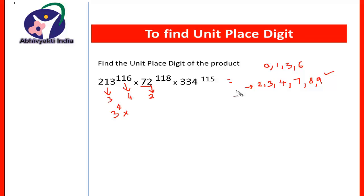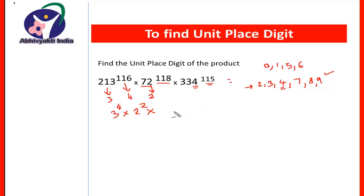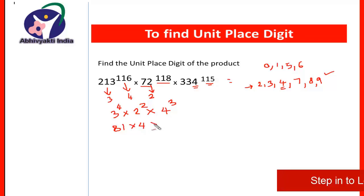For the next term, the unit place digit is 2. Again in the second case, we divide 118 by 4, get remainder 2, and write it as 2 to the power 2. For the third term, we divide the index by 4, get remainder 3, and write it as 4 to the power 3. So this gives 81, this gives 4, and this gives 64.